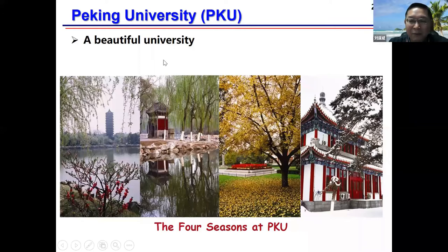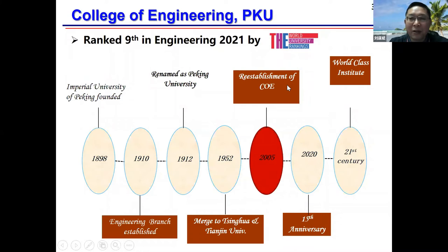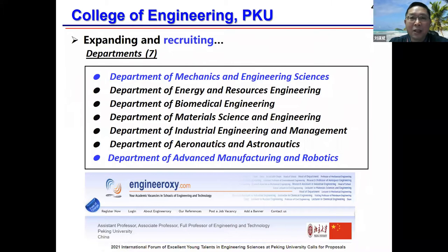Peking University was originally the Imperial University of Peking, founded in 1898, and the engineering branch was established in 1910. It was later merged with Tsinghua University and Tianjin University in 1952. In 2005 we established the College of Engineering, and last year we had the fifth anniversary. We have seven departments in our College of Engineering, and I'm in the Department of Mechanics. I'm also adjunct professor of advanced manufacturing and robotics. The College of Engineering is expanding and we are recruiting new faculty members at all levels, from assistant professor to full professor, so please feel free to let me know if you're interested.